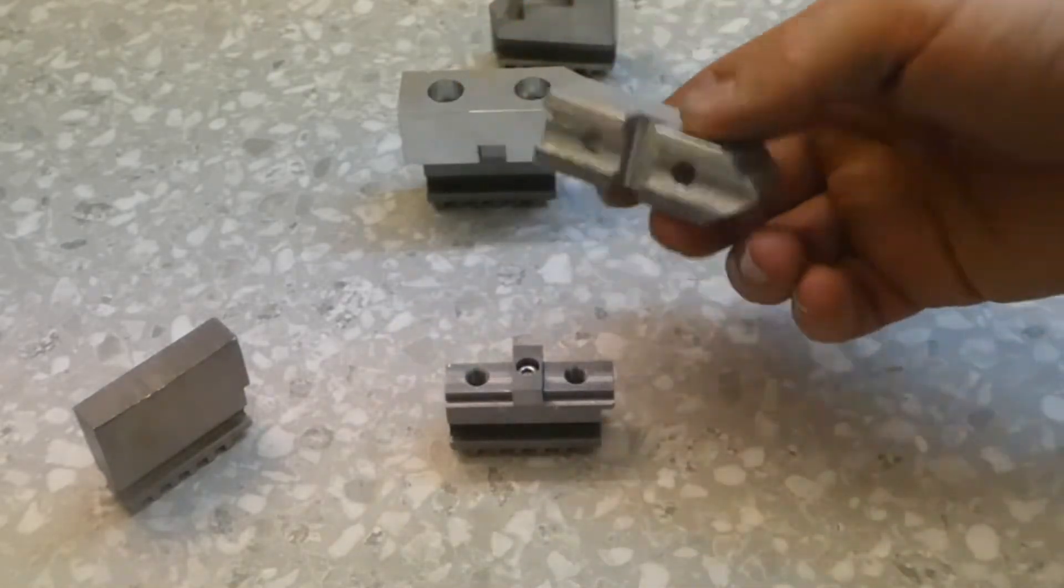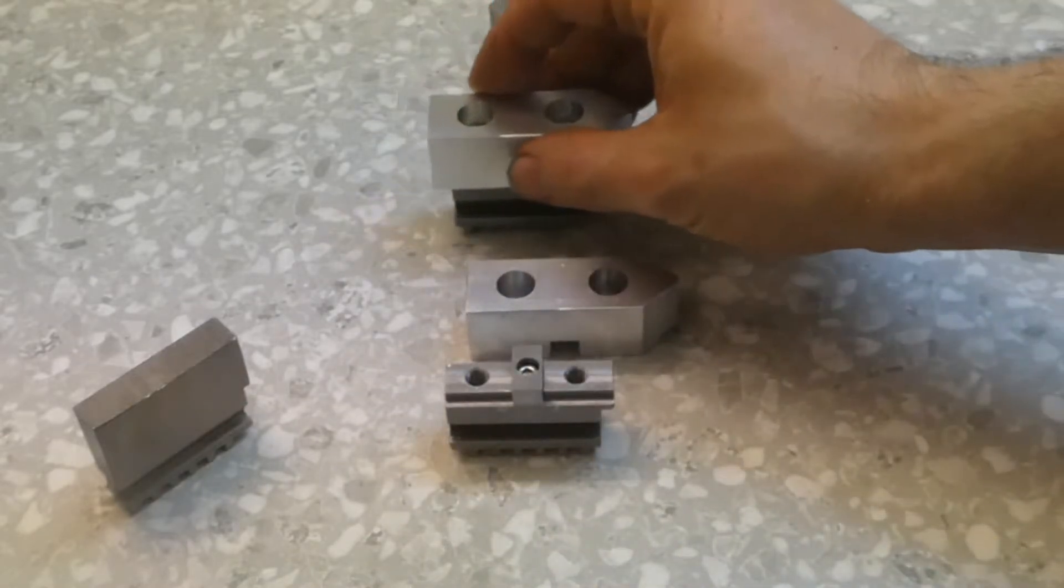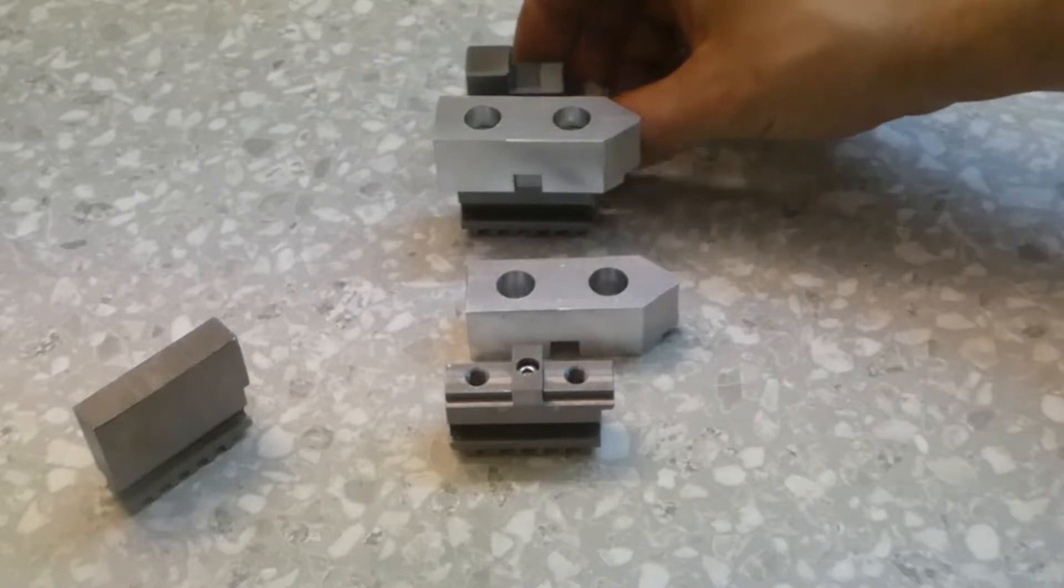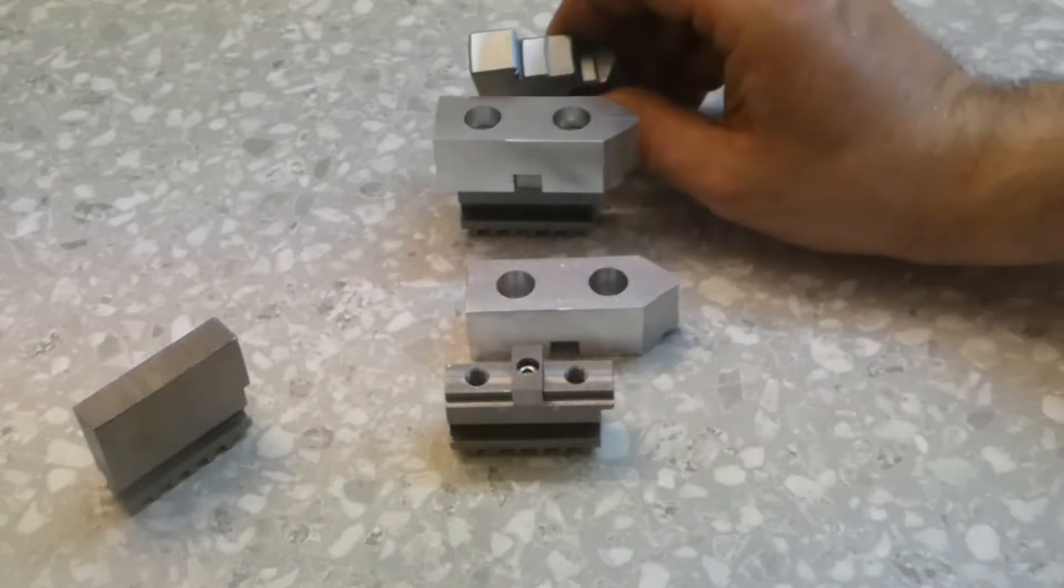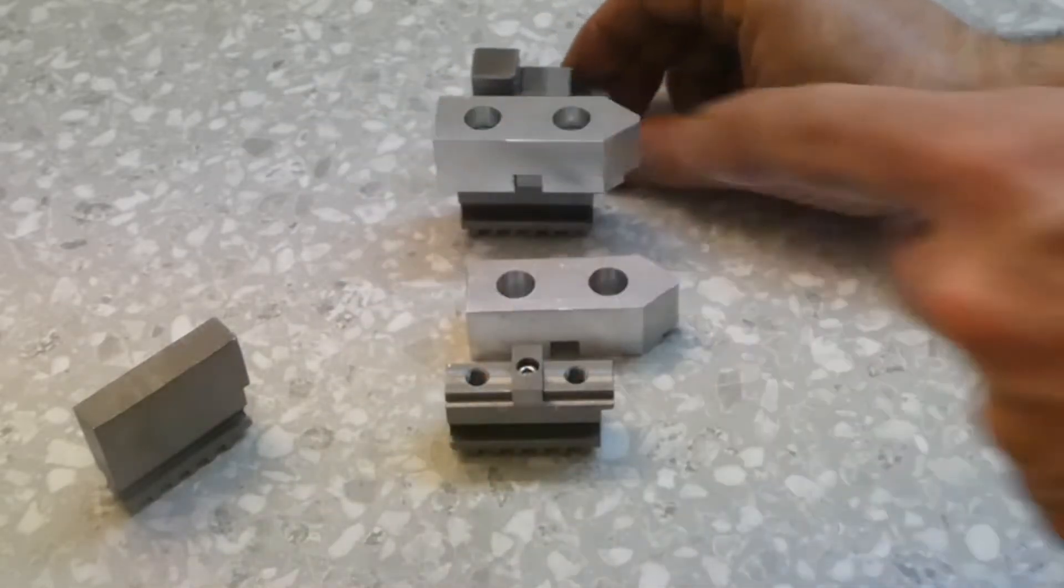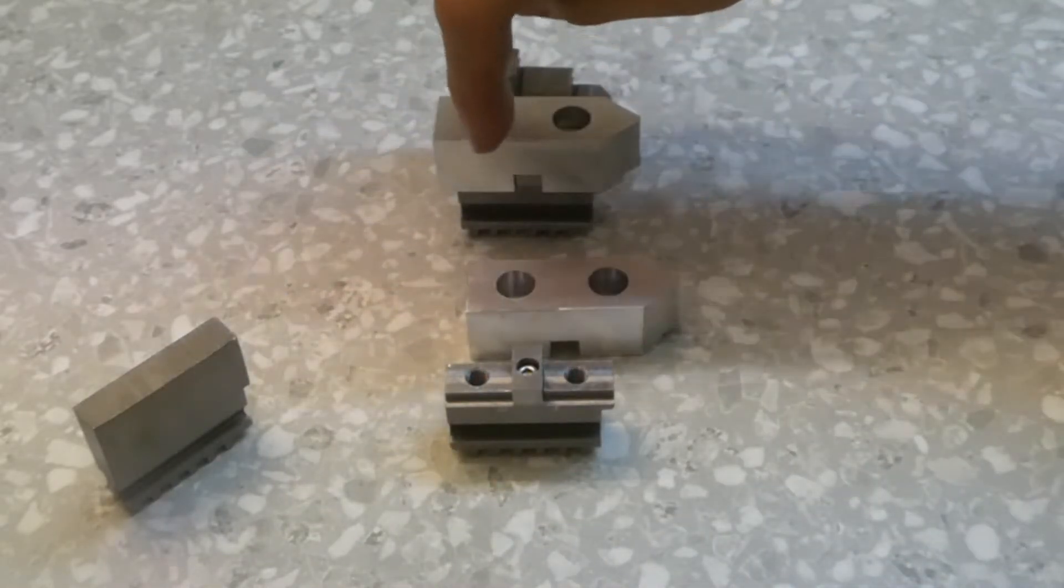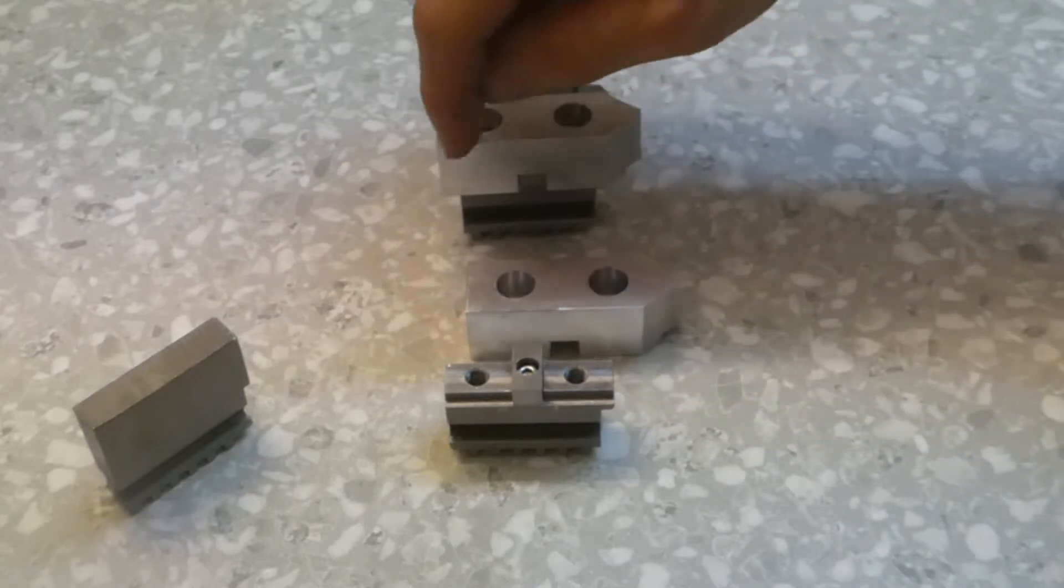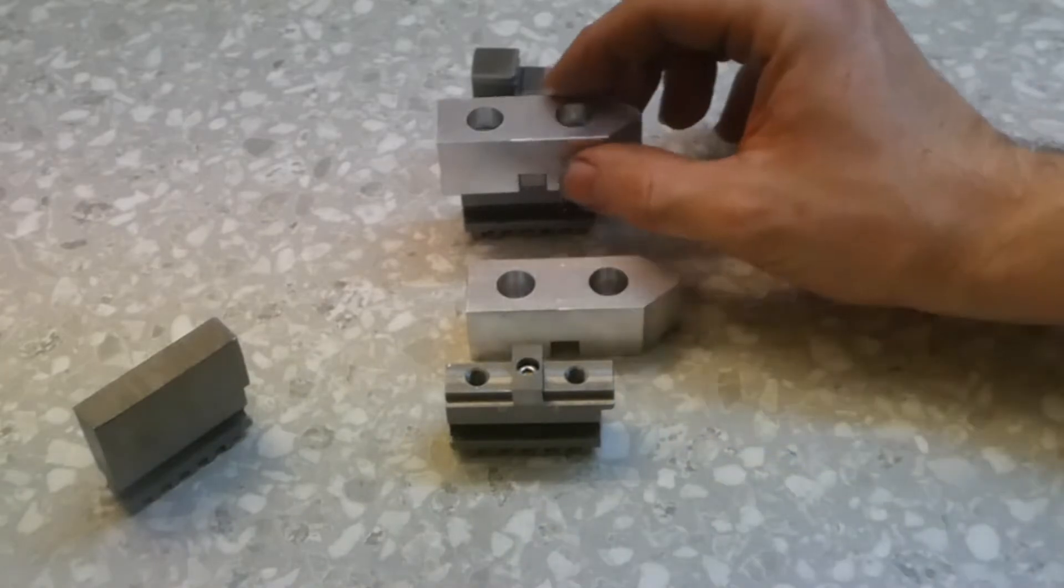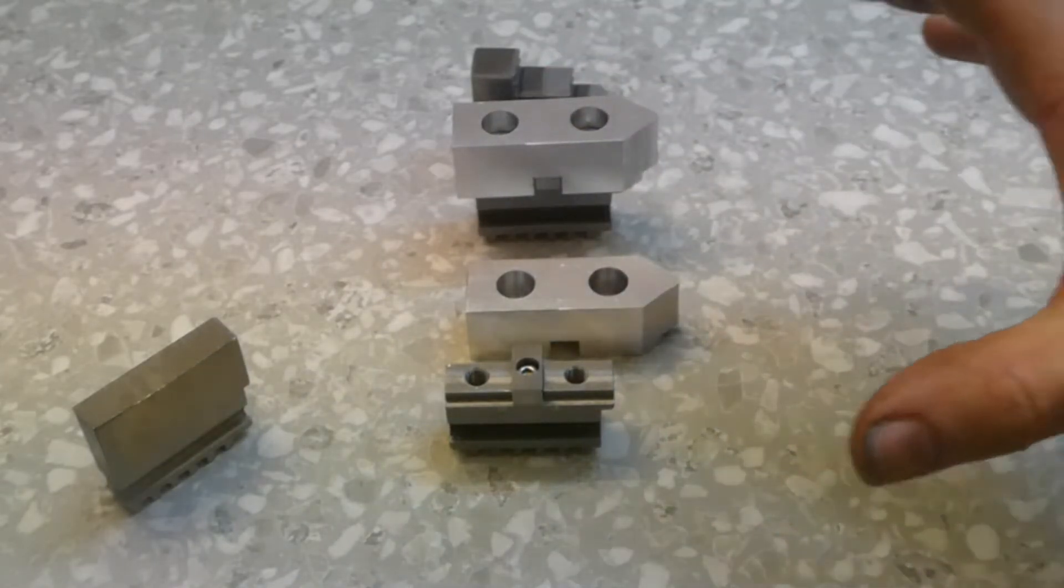Other advantage is that when we use this kind of jaws, we can fix bigger parts on your lathe, because you can see here that the limit of this one is fixed here. But in this case, we could turn this part of aluminum till here, and having a bigger diameter part in our chuck. So we will start.